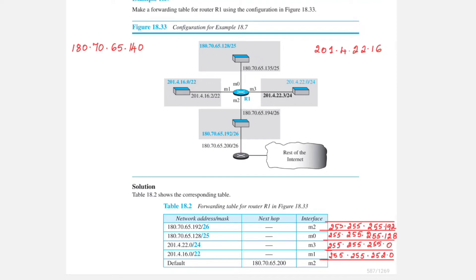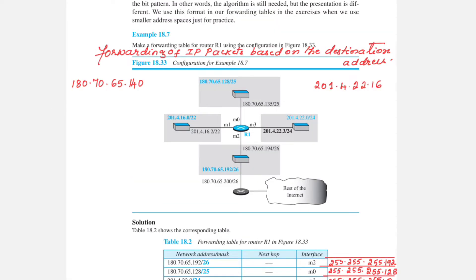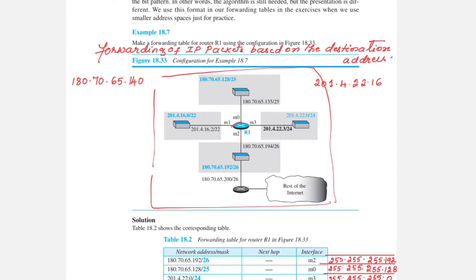Hello viewers, welcome to this video lecture series on computer networks theory course. Today's topic of discussion is on forwarding an IP packet based on the destination address. To understand this, consider a diagram where a router is connected to four networks.